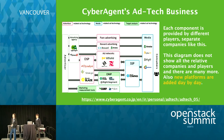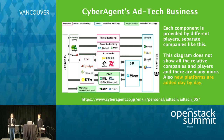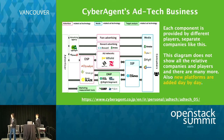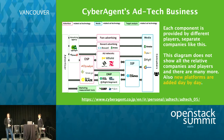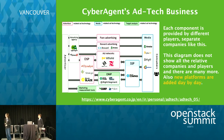This is CyberAgent's ad tech business diagram. Each component is provided by different players, separate companies. For example, CyberAgent's affiliate companies Dynalist and Smargo provide DSP. AMOADO provides ad networks. BrightSegment provides services in the DMP section. This diagram does not show all related companies and players — there are many more. Also, new platforms and technologies are added day by day.